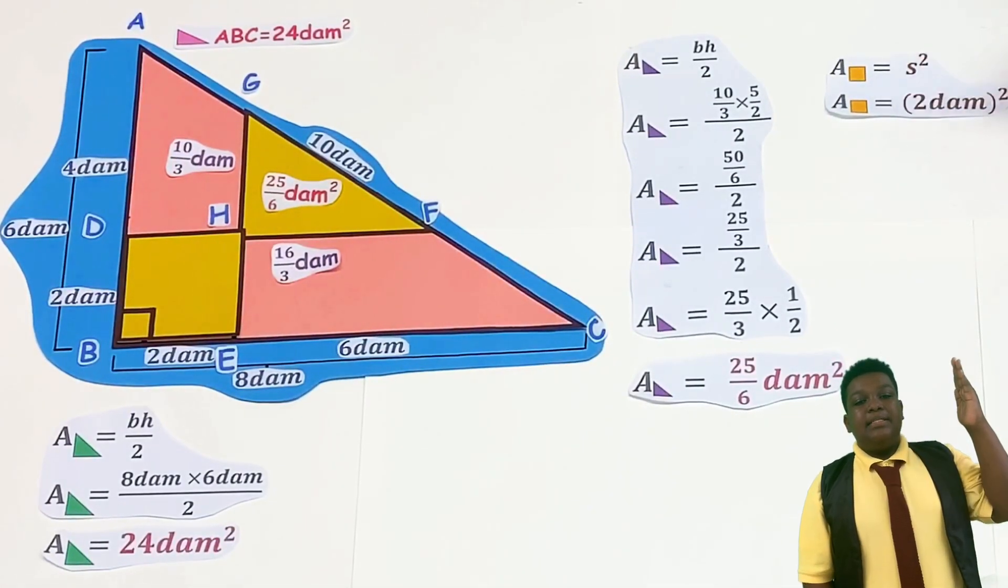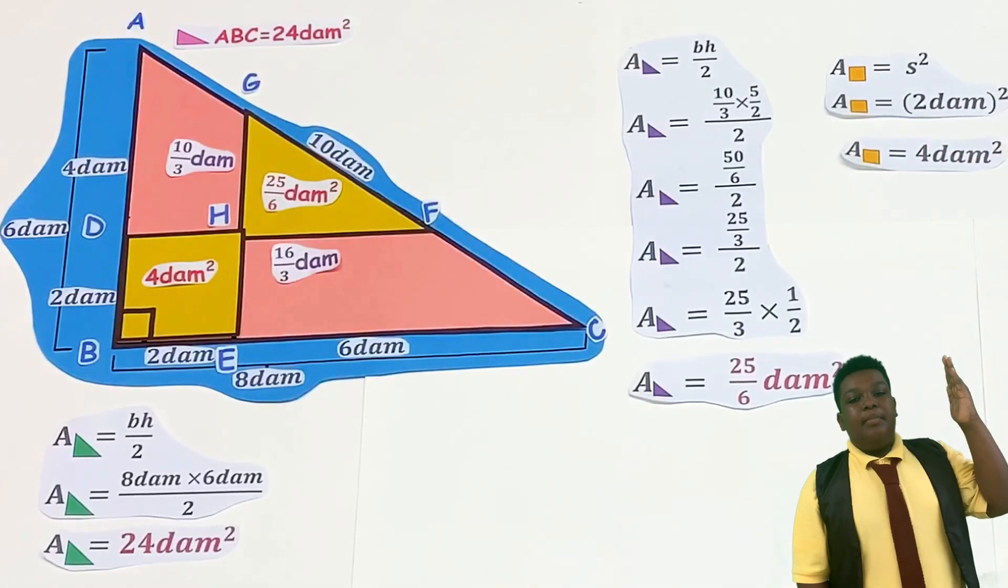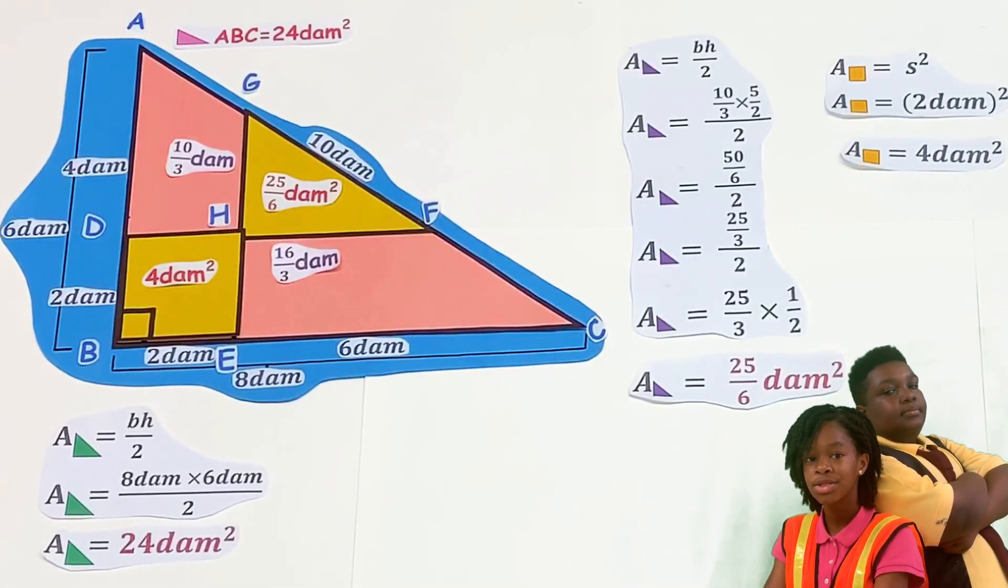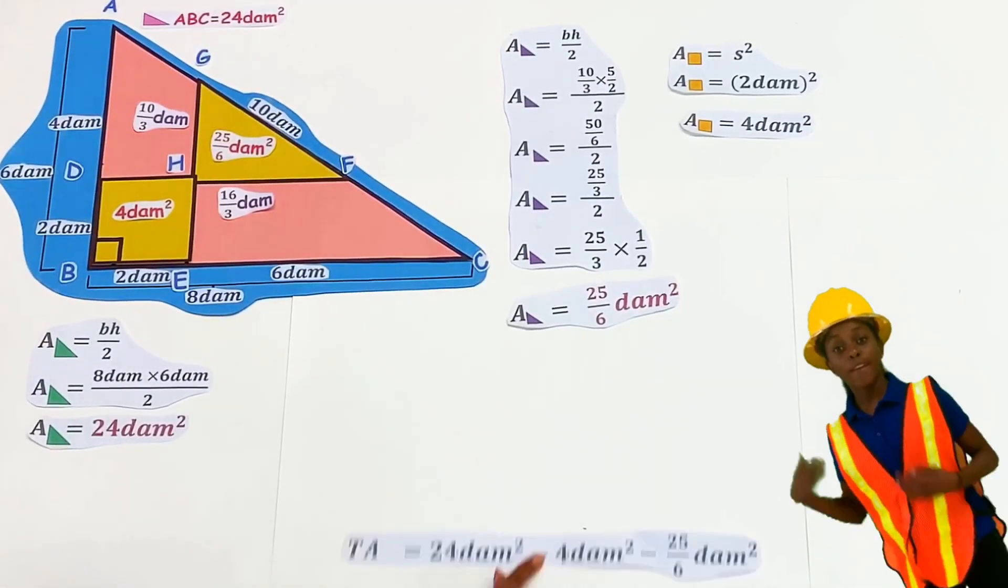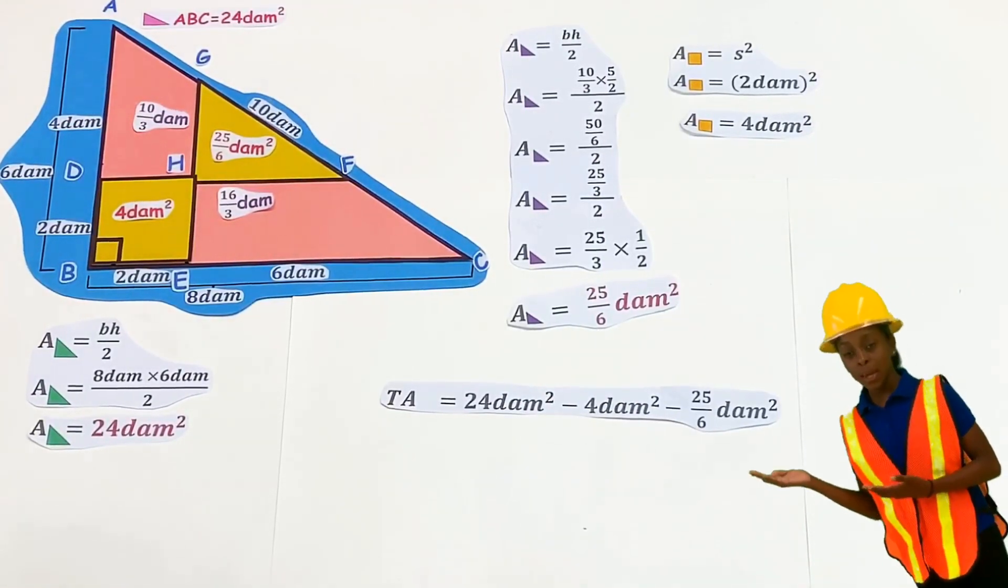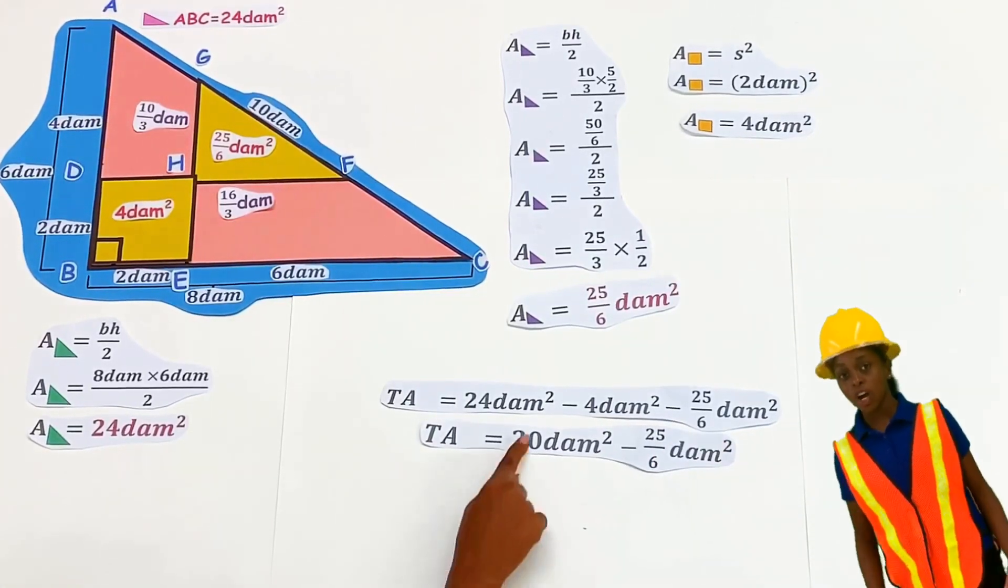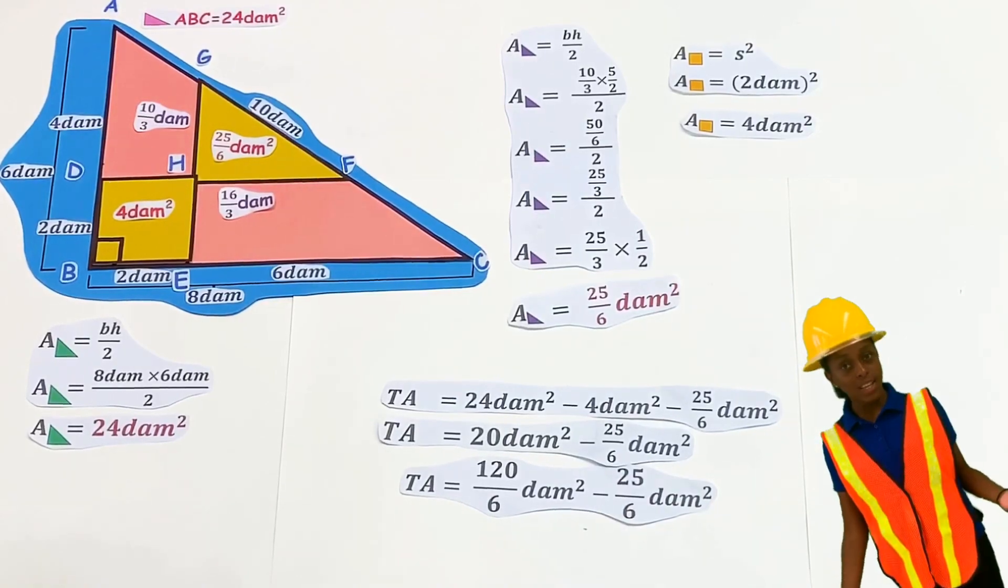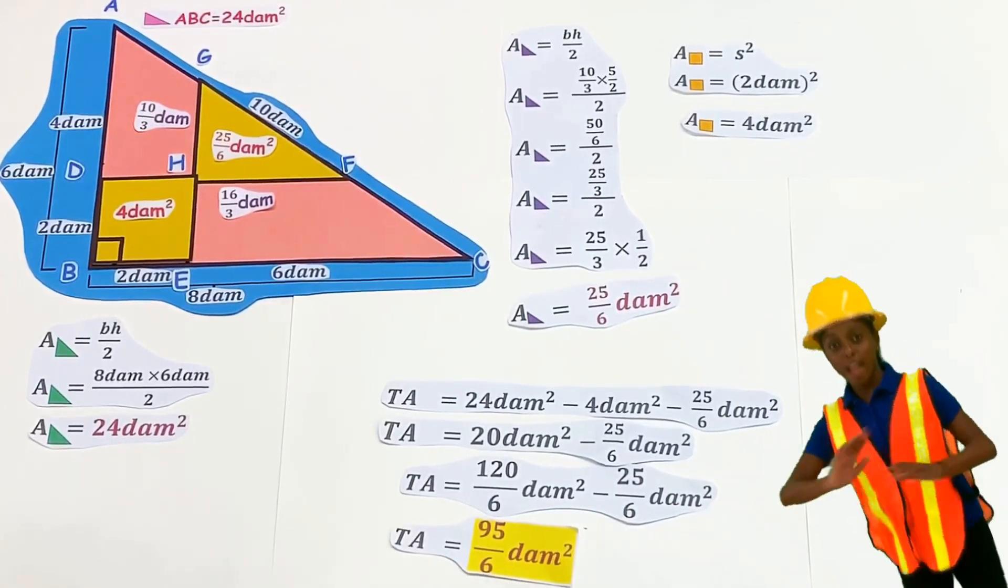The area of the square BDHE is simply side squared. So 2 squared is 4 decimeters squared. Now we'll subtract the sum of the areas from the small triangle and the square from the area of the big triangle. 24 minus 4 equals 20. 20 minus 25 over 6 is the same as 120 over 6 minus 25 over 6. The difference is 95 over 6. The lot area is 95 over 6 square decimeters.